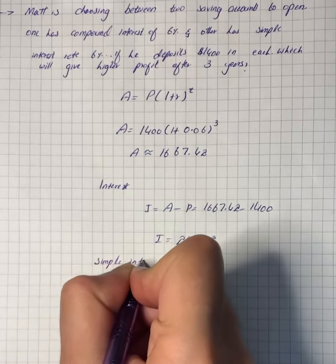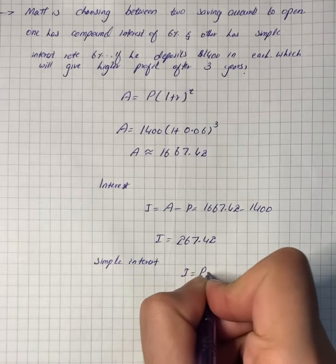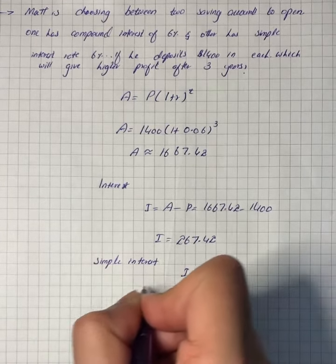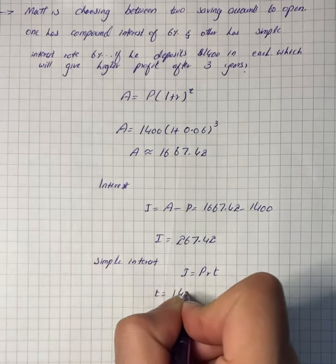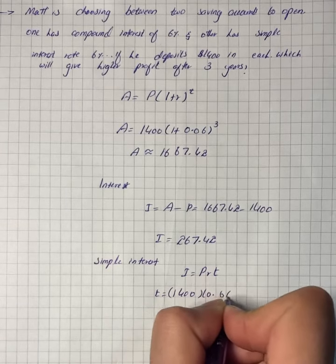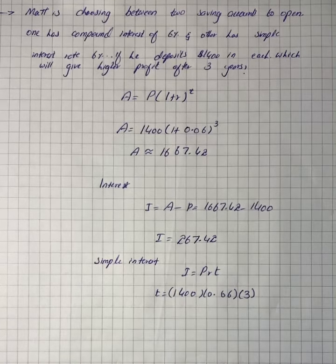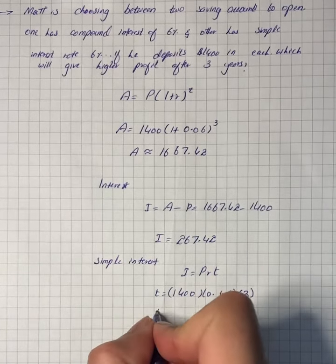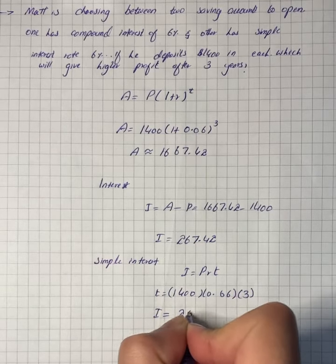Simple interest is I = P*r*t. We know that P = $1400, r = 0.06, and t = 3 years. So I = $252.